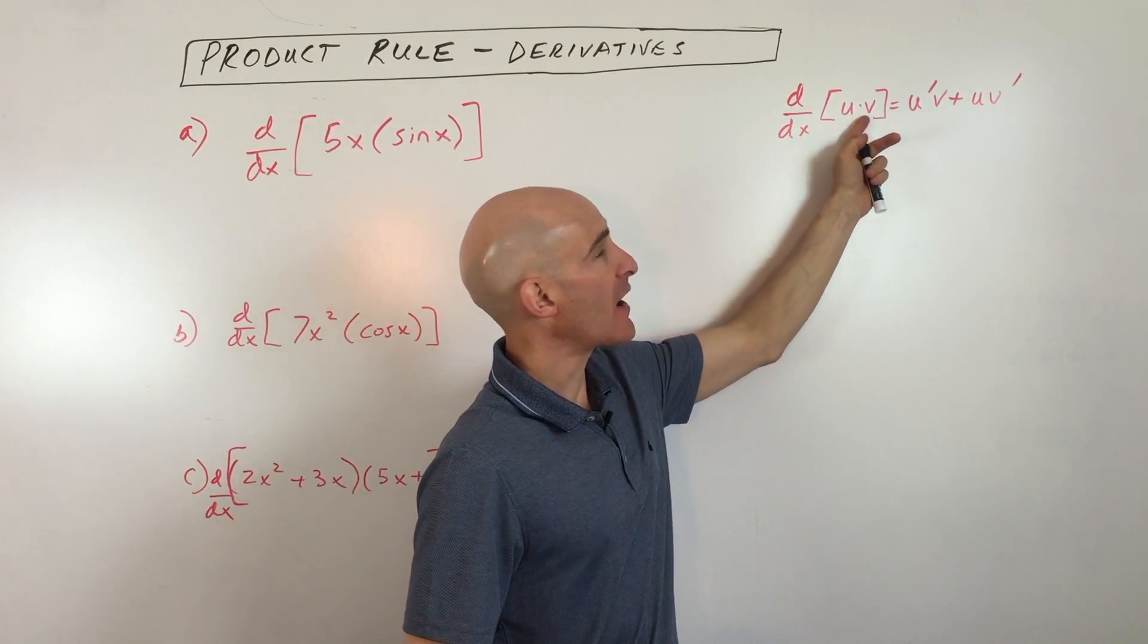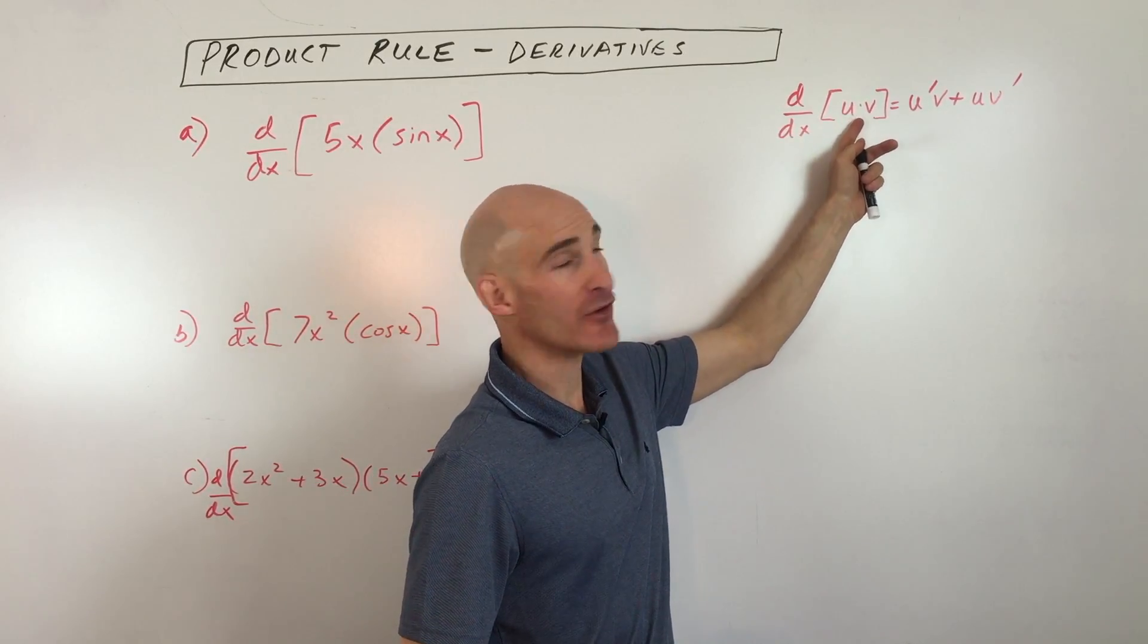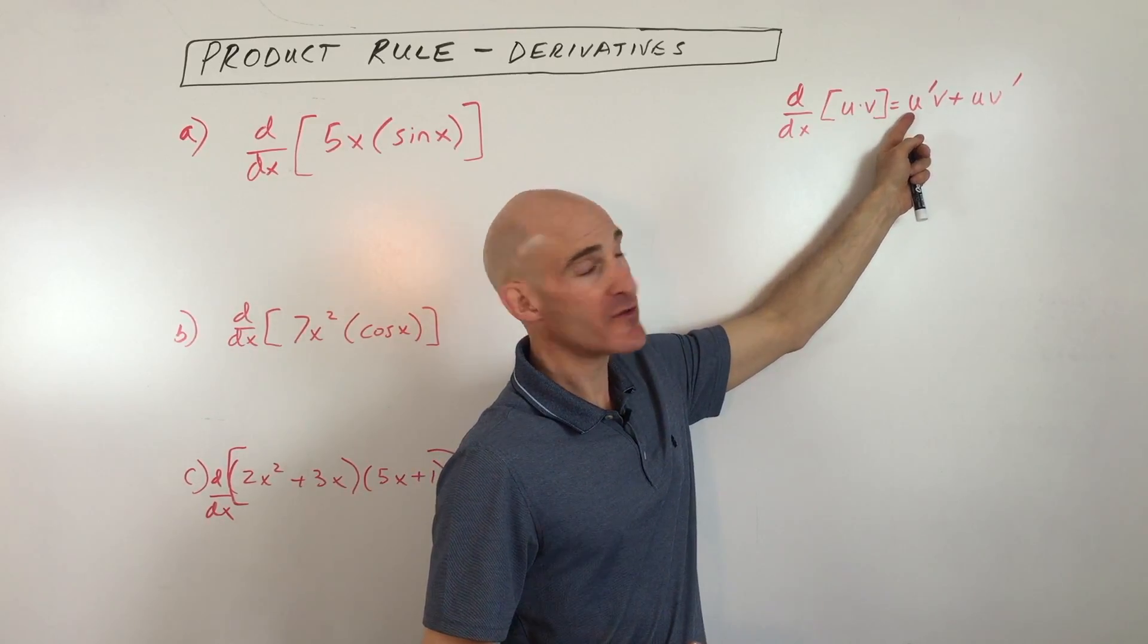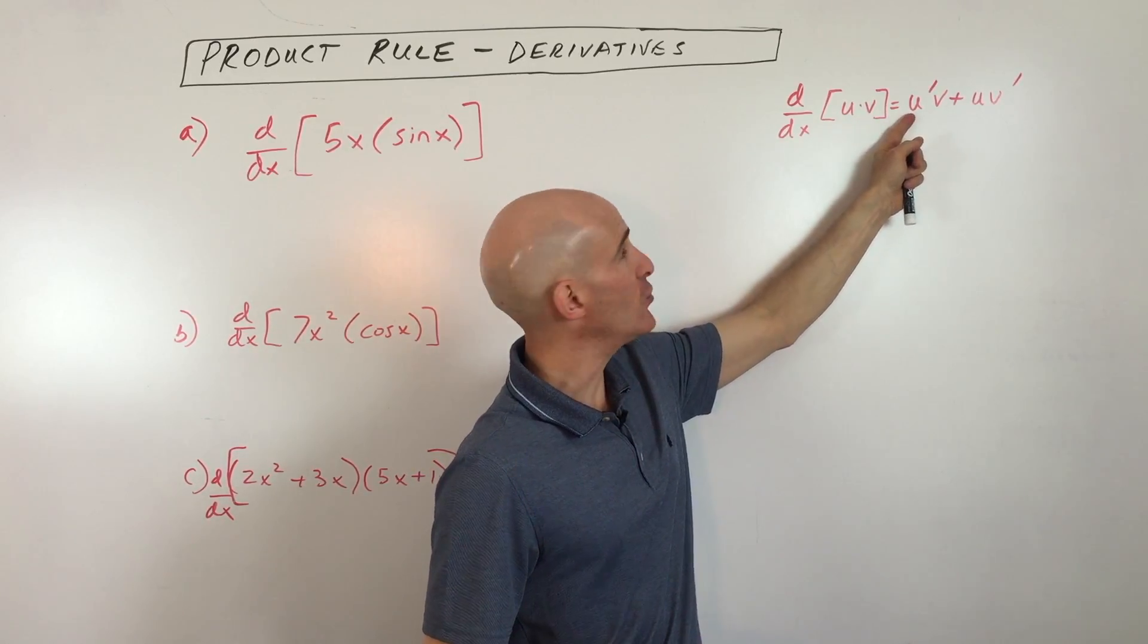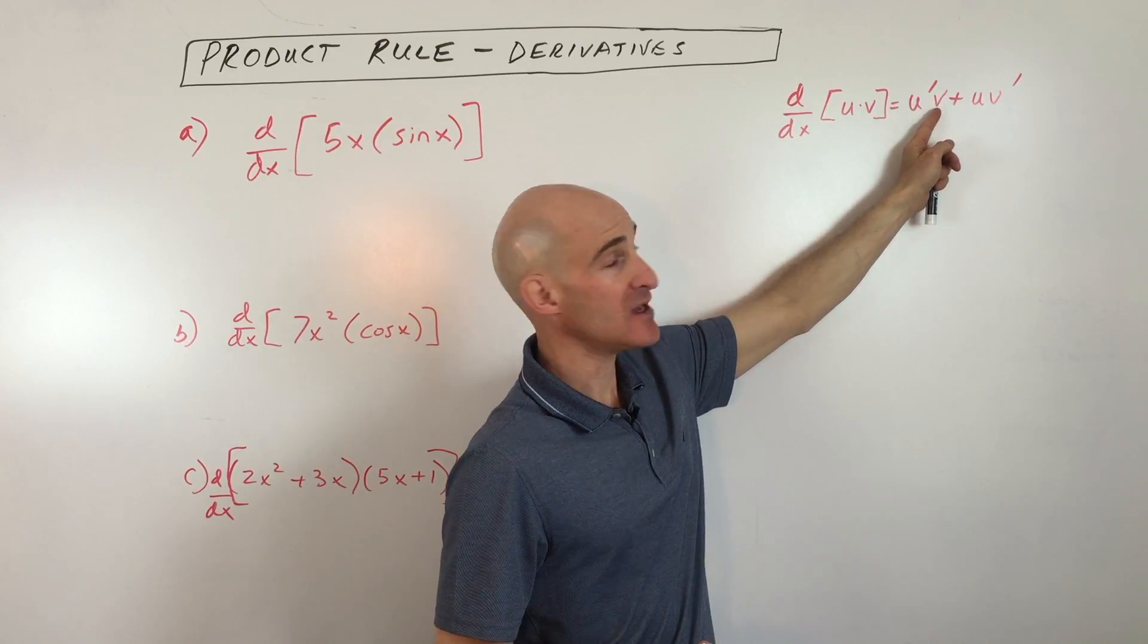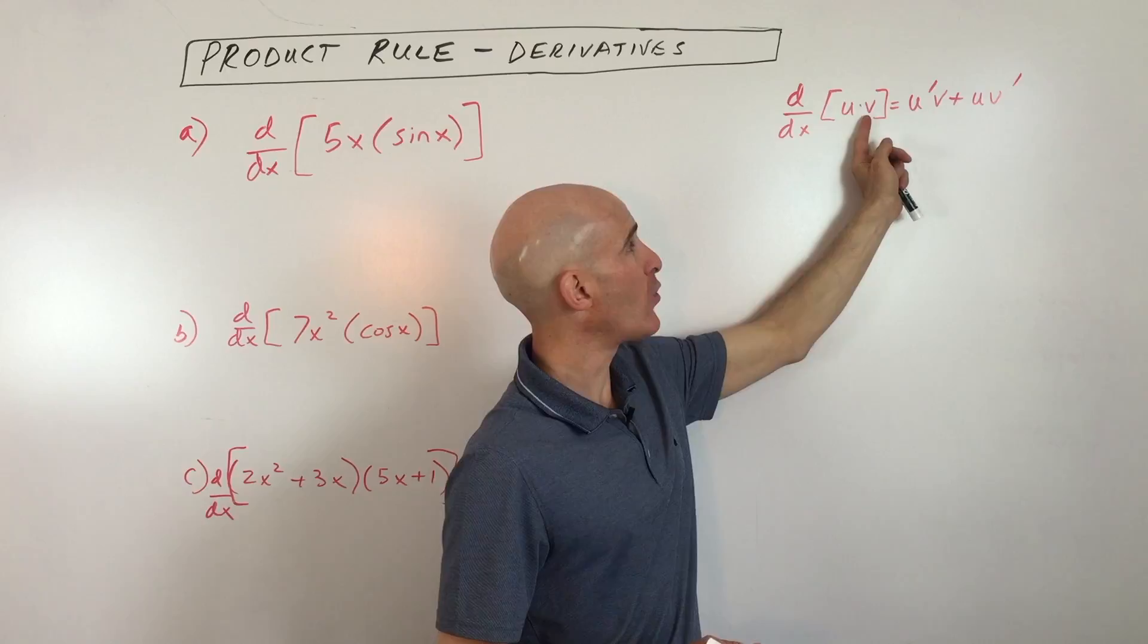When you have two quantities that are actually multiplied together, so product means times or multiply, what you do is take the derivative of the first quantity, we're calling that u, and you can see the prime just means we're taking the derivative of u times v, so we're leaving the second quantity alone.